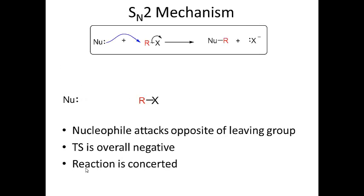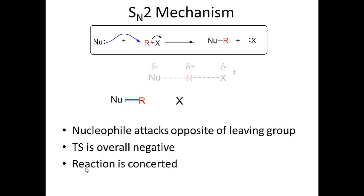Let's look at the SN2 mechanism. The nucleophile always comes in from the opposite side of where the leaving group is. The transition state has an overall negative charge and the reaction is concerted. As the nucleophile attacks, X is simultaneously leaving. In the transition state, both the nucleophile and X have a partial negative charge. The result is a new bond between the nucleophile and the substrate, with X departing as the leaving group.